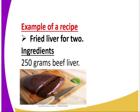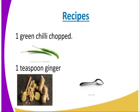Number six — an example of a recipe: fried liver for two. You can see the liver posted over there. In the ingredients, it is 250 grams of beef liver, which we have on our chopping board over there. It's a recipe for two people, so we already know the number of people. So what do we need to prepare our 250 grams of liver?